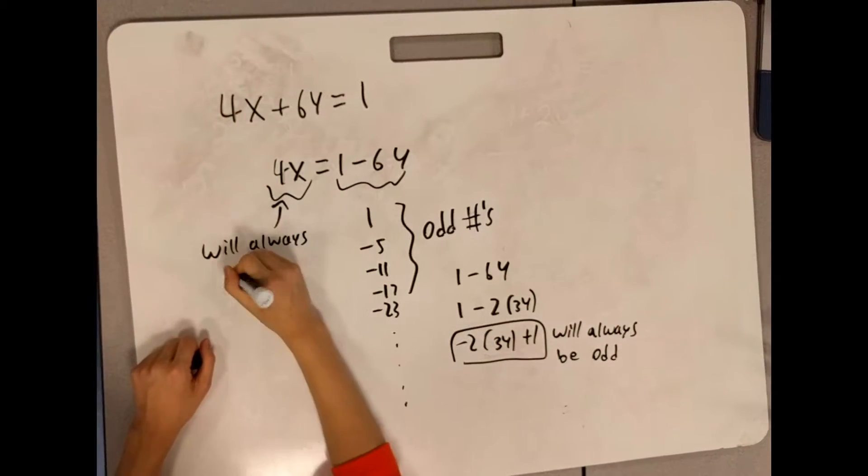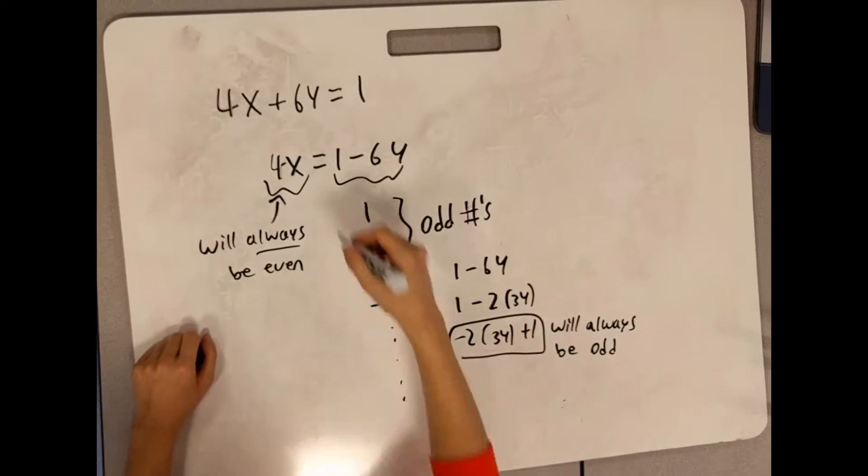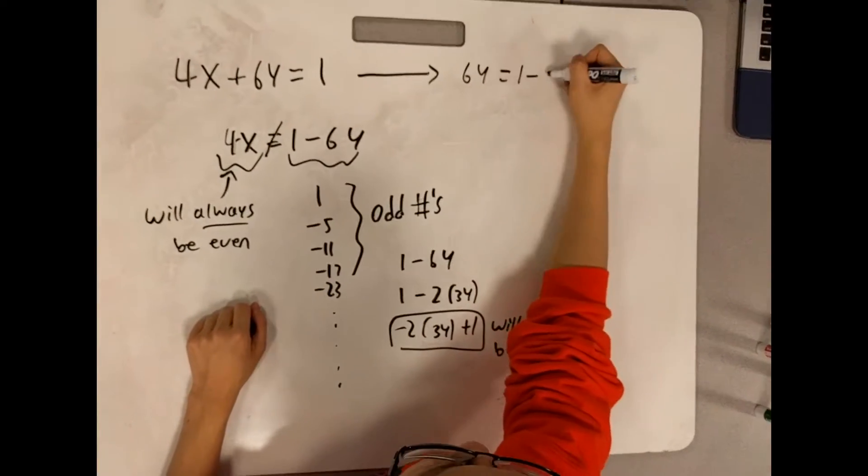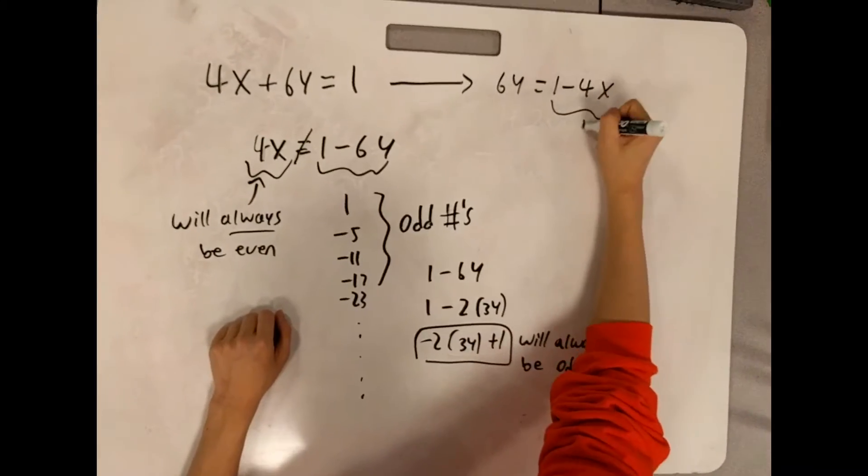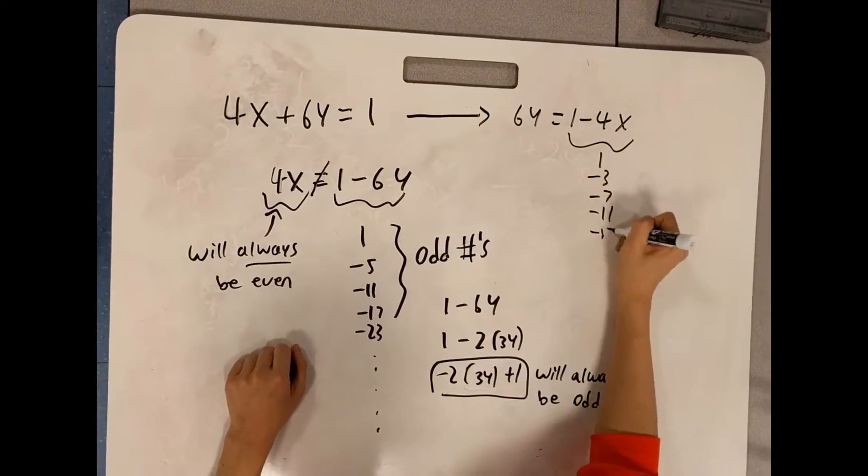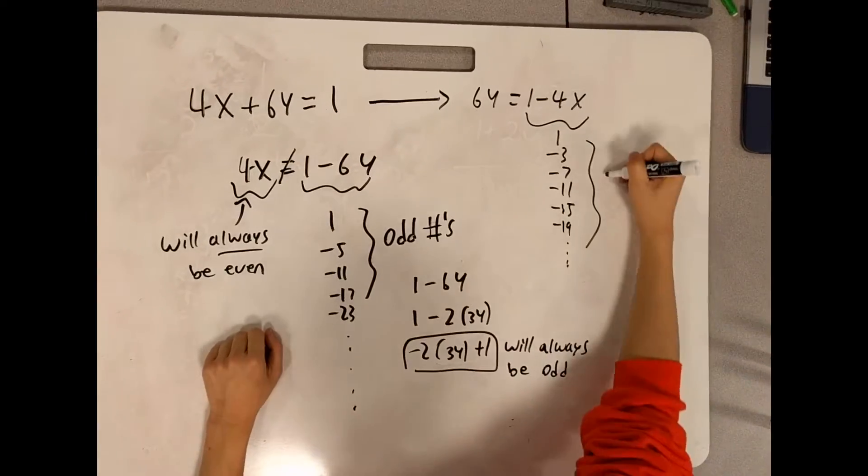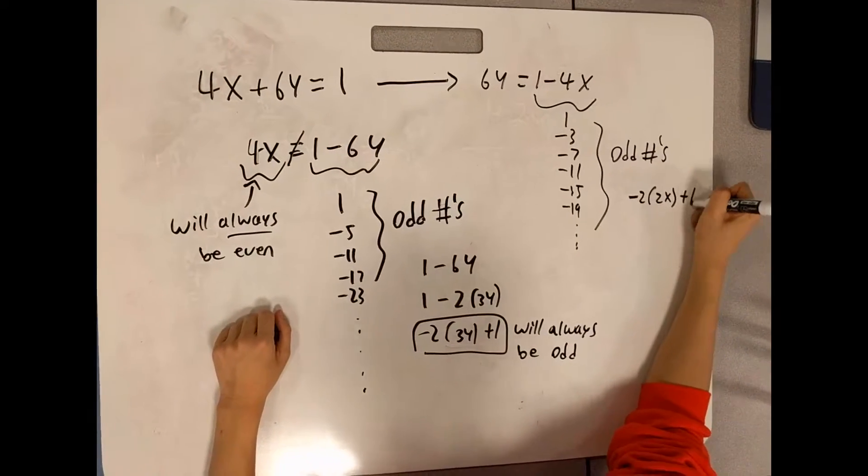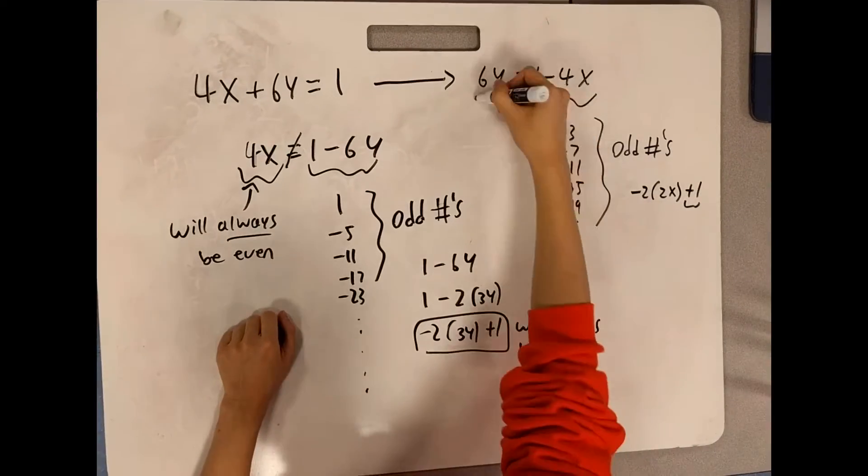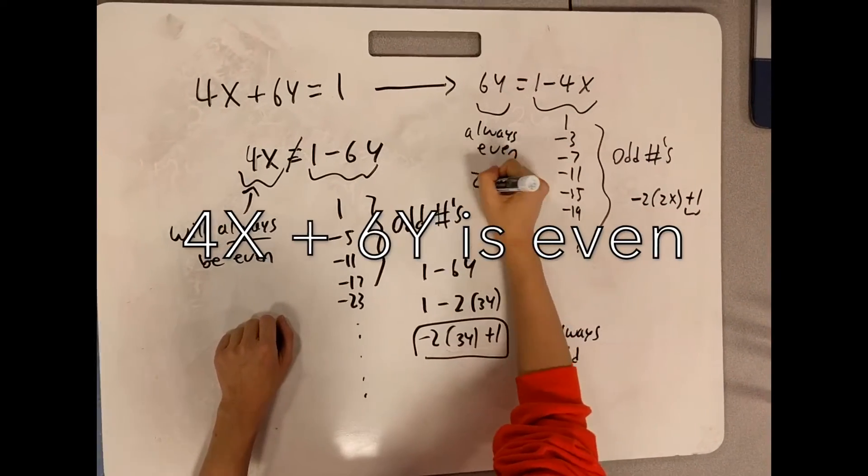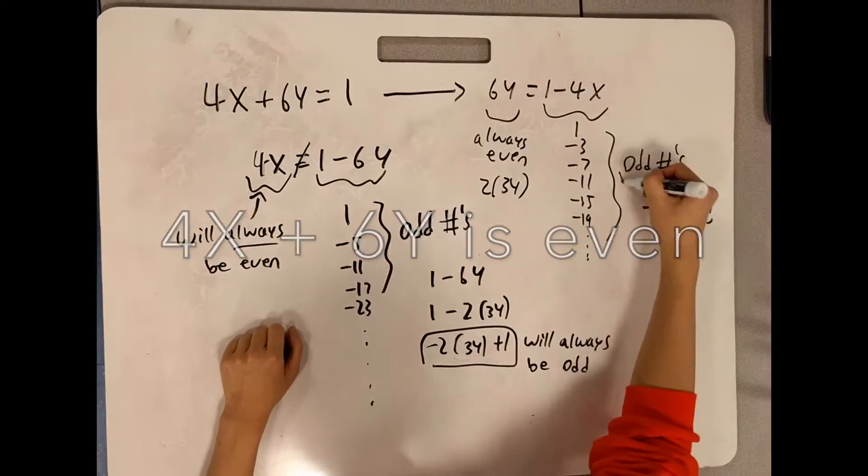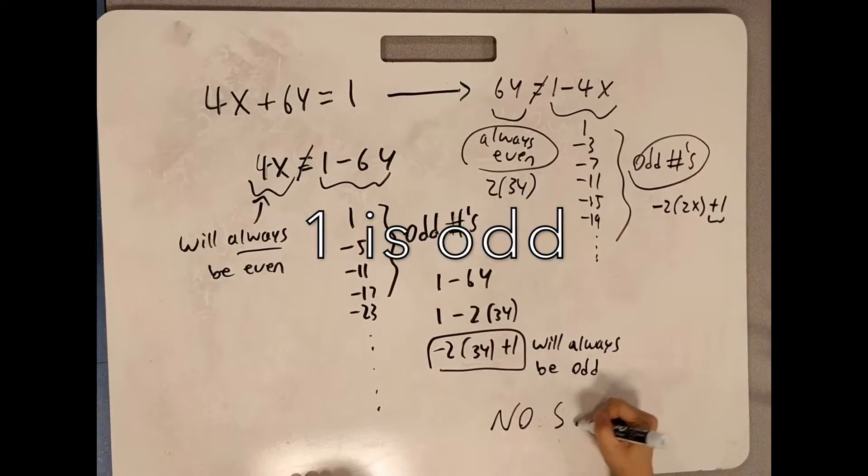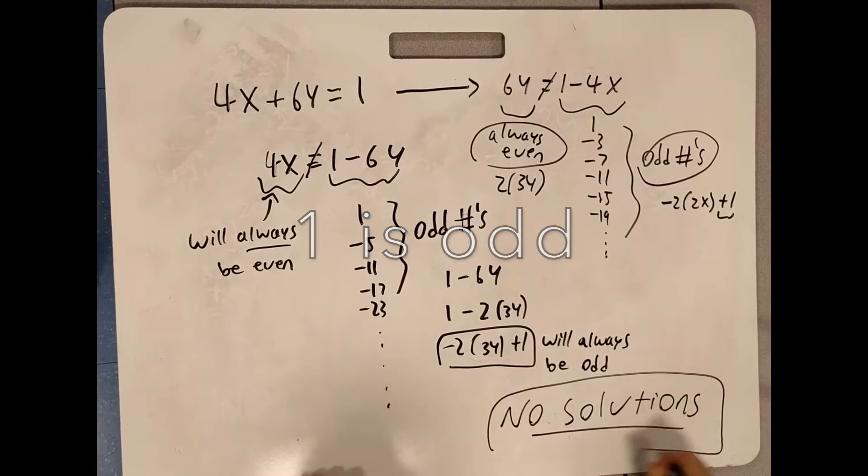We can apply the same logic in the other direction. If we subtract both sides by 4x, we obtain the equation 6y equals 1 minus 4x. 1 minus 4x will always be an odd number, since 4x is even. The left side of this equation, however, must also be an even number. This means that for all integers x and y, there are no solutions to this equation. Another way to look at this is to notice that the left side is even and the right side is odd when both x and y are integers. Therefore, the equation is false for all integer pairs x, y.